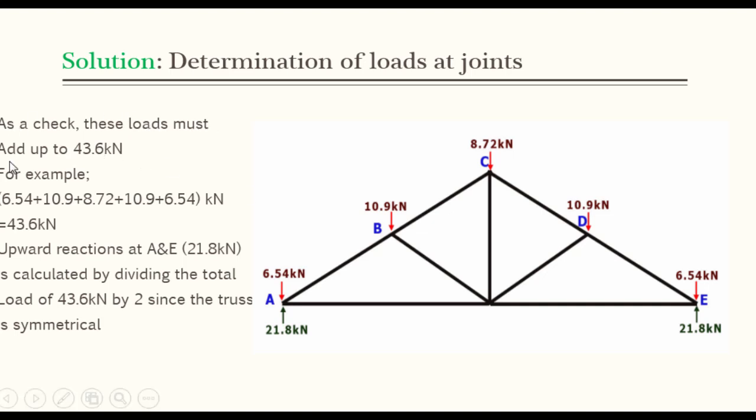As a check, these loads must add up to 43.6 kilonewtons. For example, when we add up these joint loads indicated by the downward red arrows, it must all add up to the total load carried by the truss. And since forces must balance, there must be upward reactions too at A and E. And those upward reactions are calculated by dividing the total load carried by the truss, which is 43.6 by 2, to give us 21.8 kilonewtons. Since the roof truss is symmetrical, you can also determine the upward reactions by taking moments either at A or at E.